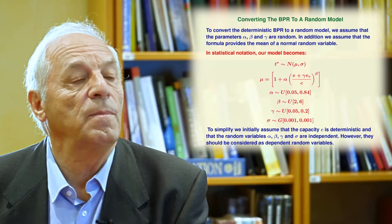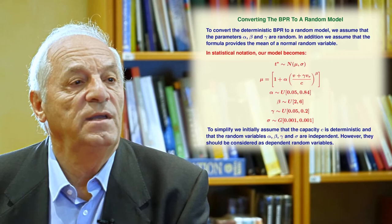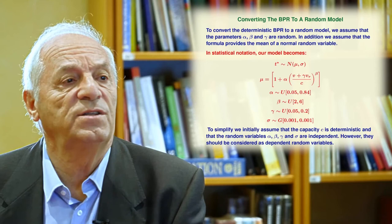For example, we assume that the mean value of the travel time is the one given by the formula. So the deterministic formula gives you the mean value of the travel time. But we assume that it is a normal distribution.